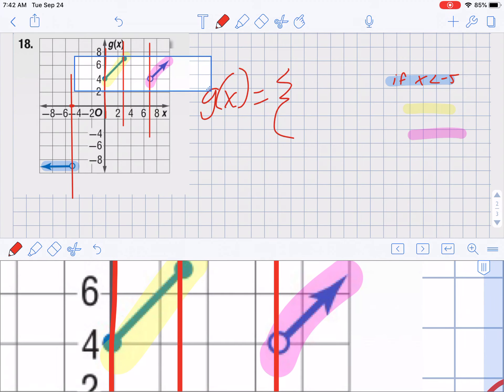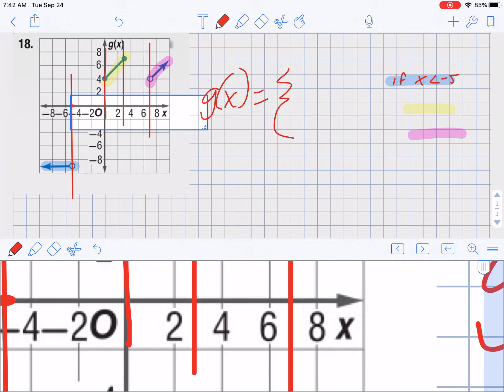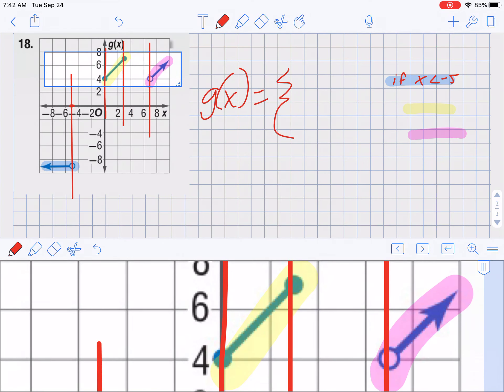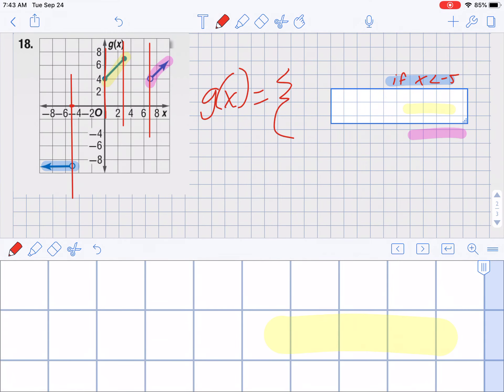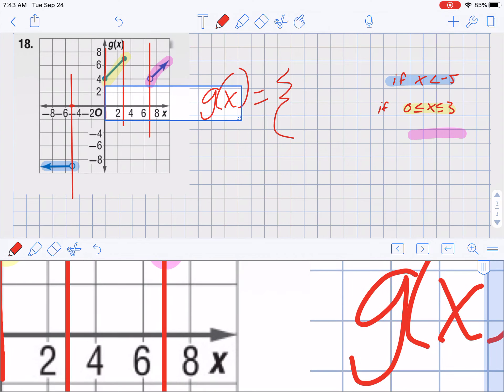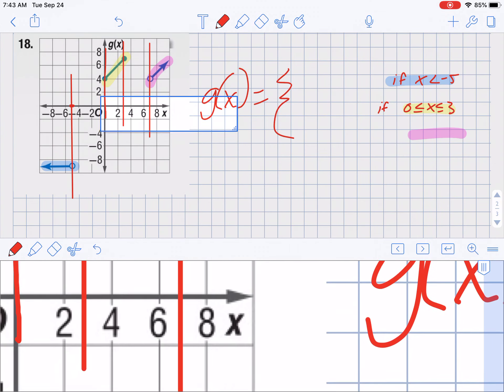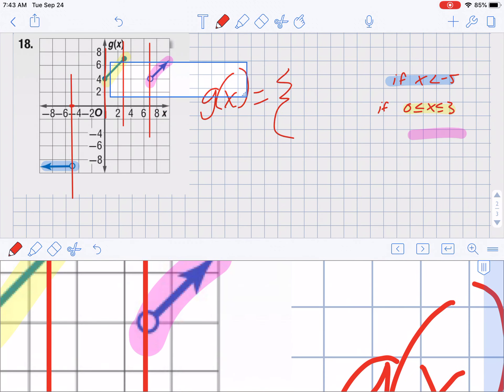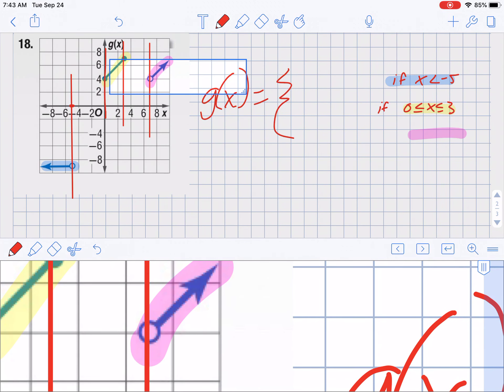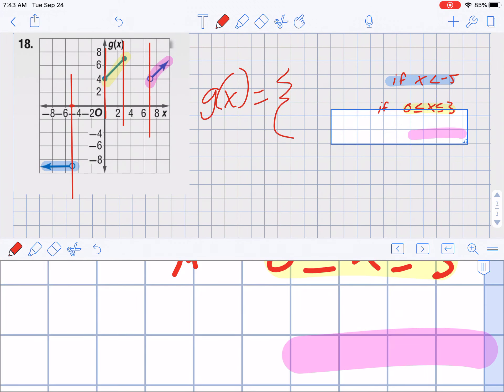The yellow one, since it's bounded on both the 0 and 3, and I have two closed circles, it's going to be if from 0 is less than or equal to X, which is less than or equal to 3. And then this one is bounded at X equals 7 and greater than, and since it's an open circle again, it's just going to be greater than 7. So there's the boundaries.